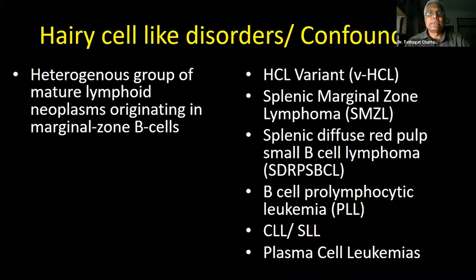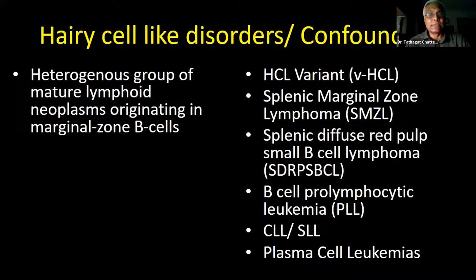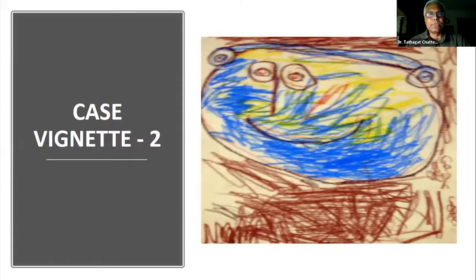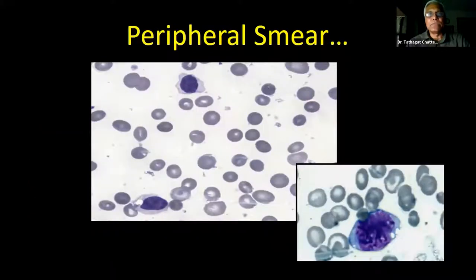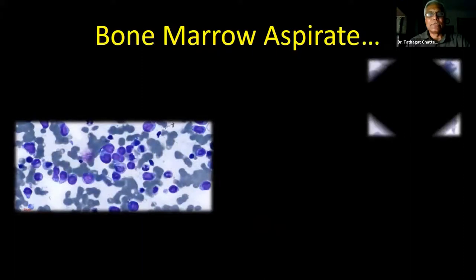In hairy cell-like disorders we have: hairy cell variant, SMZL, a new entity called SDRPL (splenic diffuse red pulp small B-cell lymphoma), BPLL — now known as the leukemic phase of mantle cell lymphoma and discarded from WHO 2022 — and plasma cell leukemia mimics. Case 2: an 81-year-old man evaluated for leukocytosis with 90% atypical lymphocytes and mild thrombocytopenia. The atypical lymphocytes were large with round or oval nuclei, condensed chromatin, often prominent nucleolus, blue-gray cytoplasm, scattered hairy projections resembling pro-lymphocytes. Flow revealed CD19-positive, CD11C-positive, CD103-positive, CD25-negative.